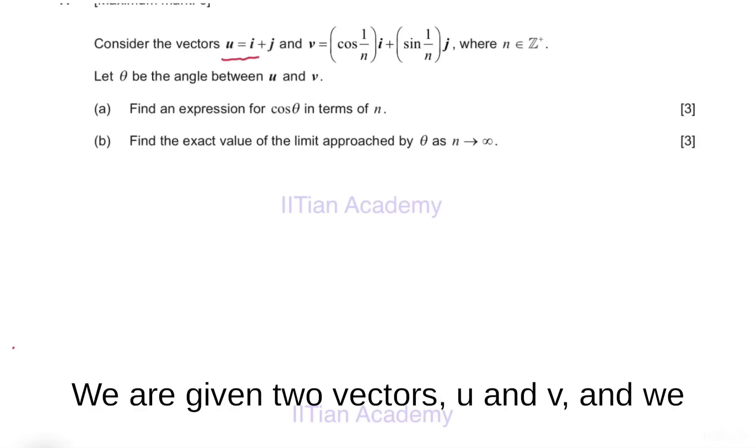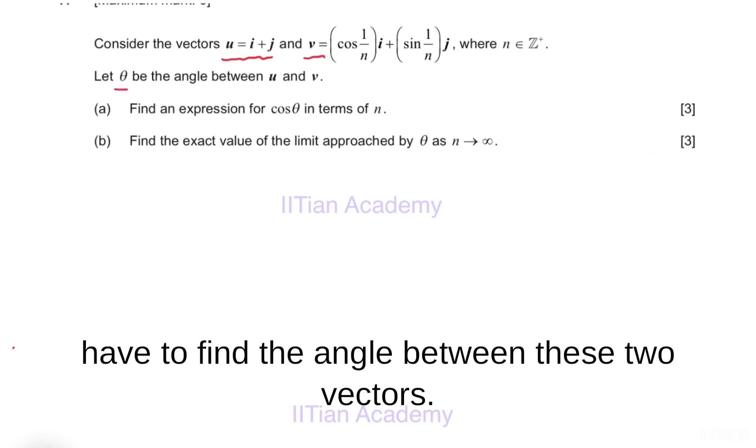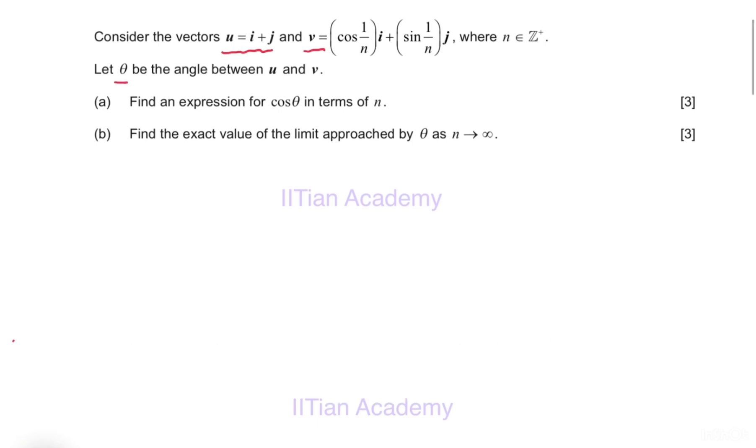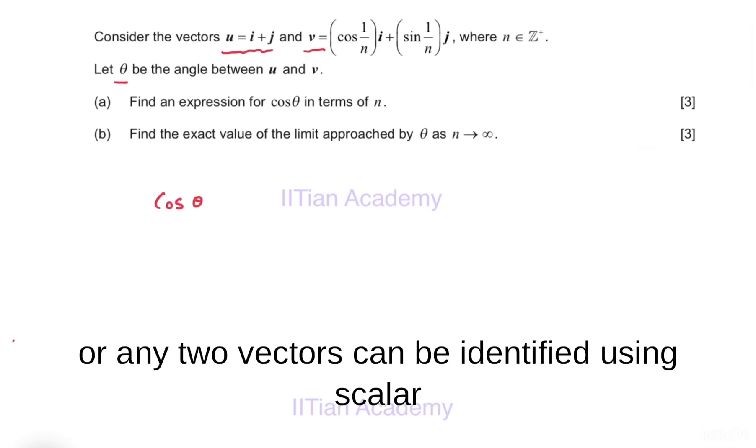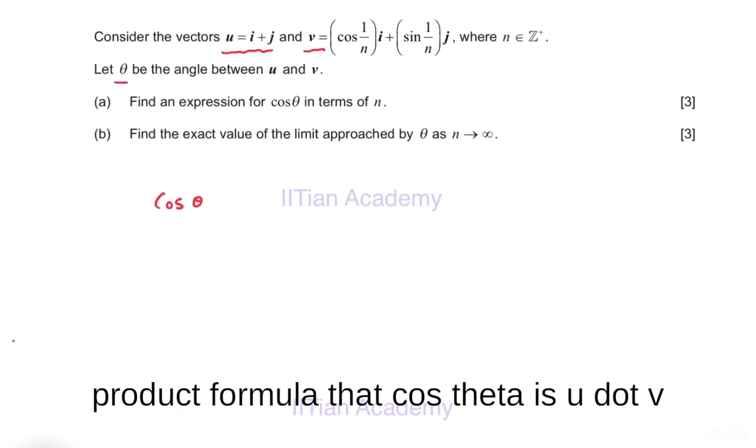We are given two vectors u and v, and we have to find the angle between these two vectors. We know the angle between any two vectors can be identified using the scalar product formula: cos θ equals u dot v divided by the modulus of u times the modulus of v.